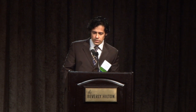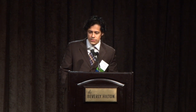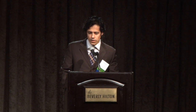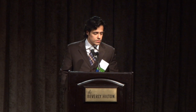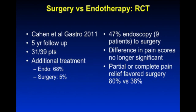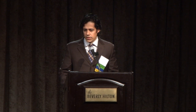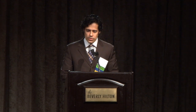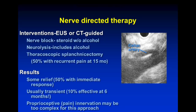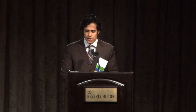A 2011 follow-up of that cohort in Gastroenterology included 31 patients. The endoscopy group required a lot more additional treatment, and about half of them — approximately nine patients — went on to surgery. Notably, half of them did not go on to surgery. Pain scores were no longer significantly different, though partial or complete pain relief still favored surgery. Regarding nerve-directed therapy, a celiac plexus block (rather than neurolysis) can be offered; outcomes are modest and temporary, but may be worth trying in a desperate patient.